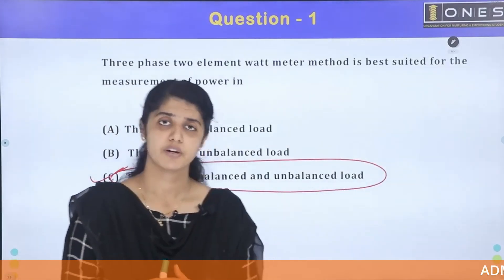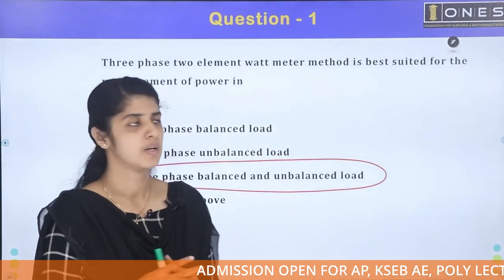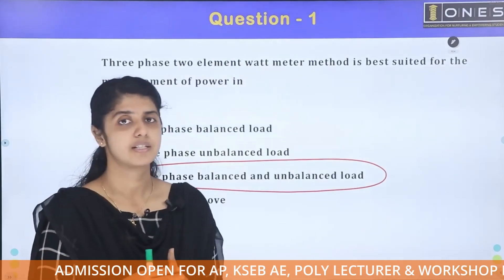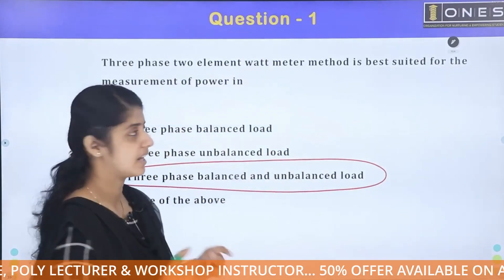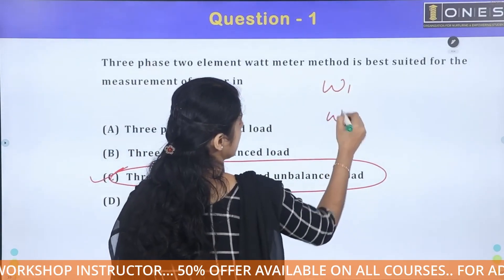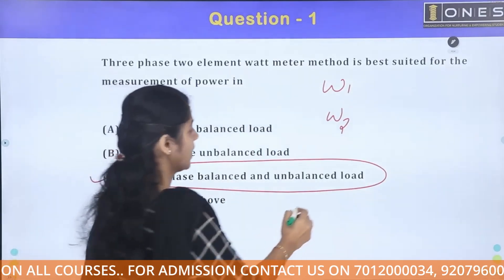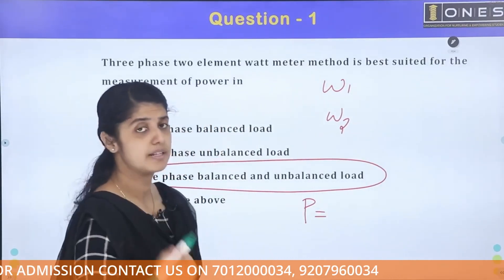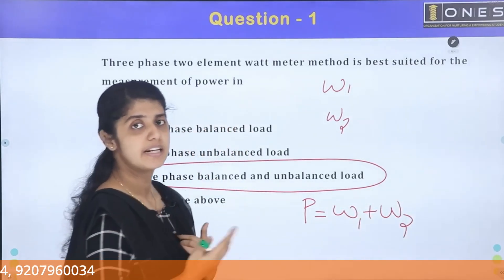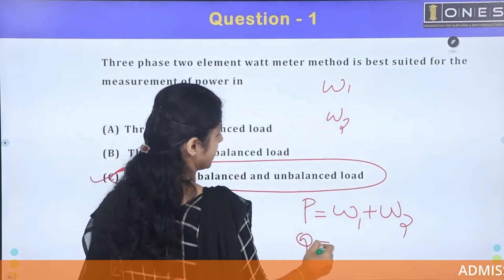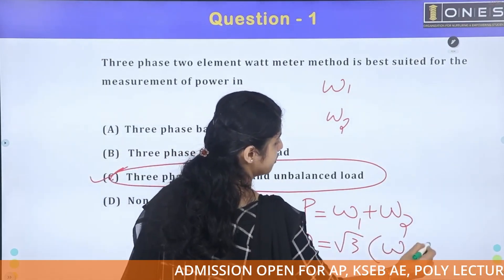The 2-wattmeter method is best suited for 3-phase power measurement. We have 2 wattmeters — W1 and W2 — connected for 3-phase power measurement. The active power P is equal to W1 plus W2, meaning the sum of the two wattmeter readings gives active power. The reactive power Q is equal to root 3 times (W2 minus W1).